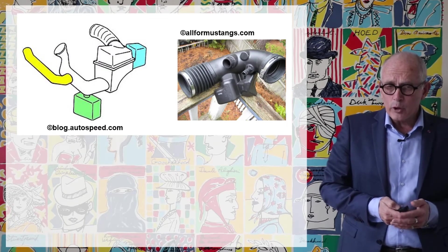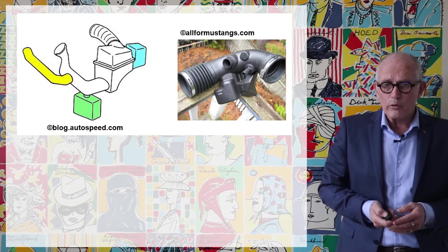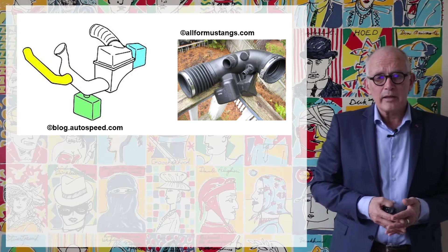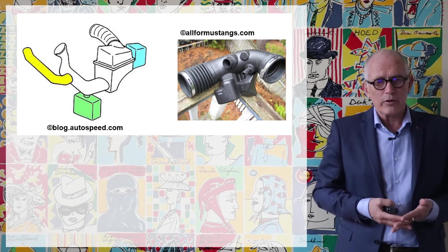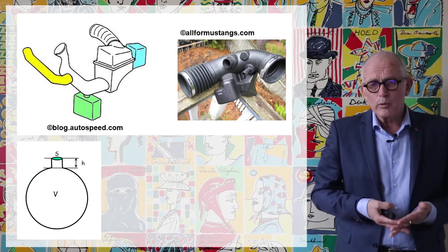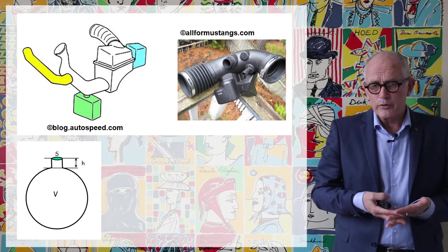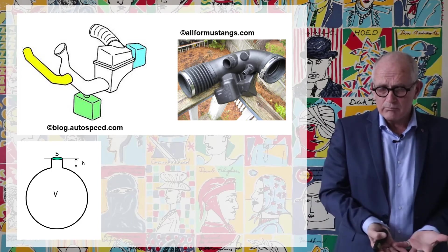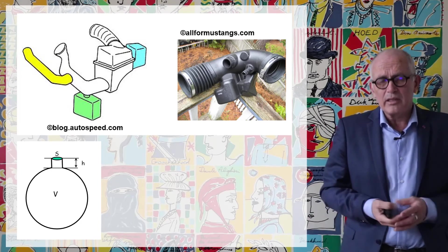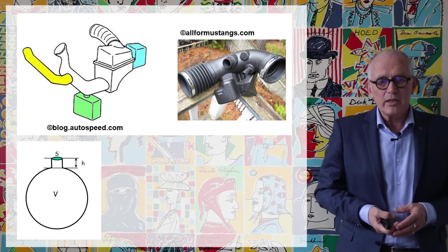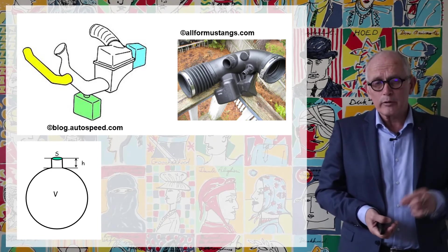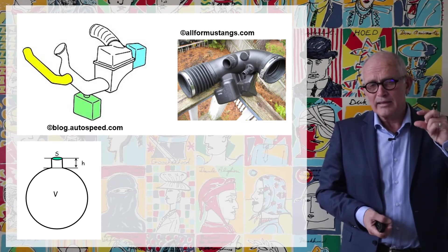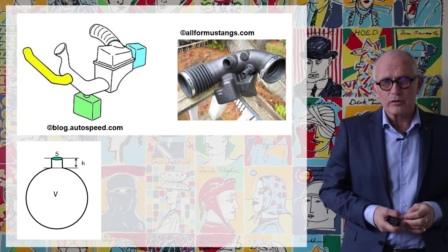There is another type of resonator that you also find and you see it on the picture on intake lines and it's called a Helmholtz resonator. The principle of a Helmholtz resonator is different. You see that it is made of a cavity, a large cavity with a volume V that is connected to the duct through a neck that has a certain height H and a certain cross section S.